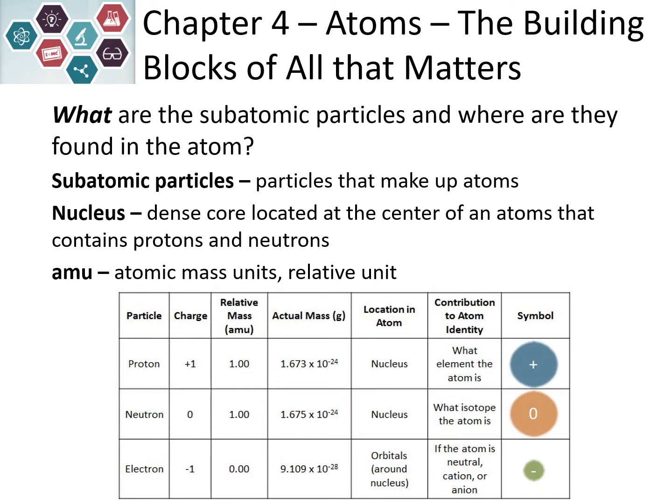Neutrons have no charge — they're neutral. They also have one atomic mass unit for their mass and are located in the nucleus. Because they have no charge, we usually represent them with a zero or a blank sphere in the nucleus.